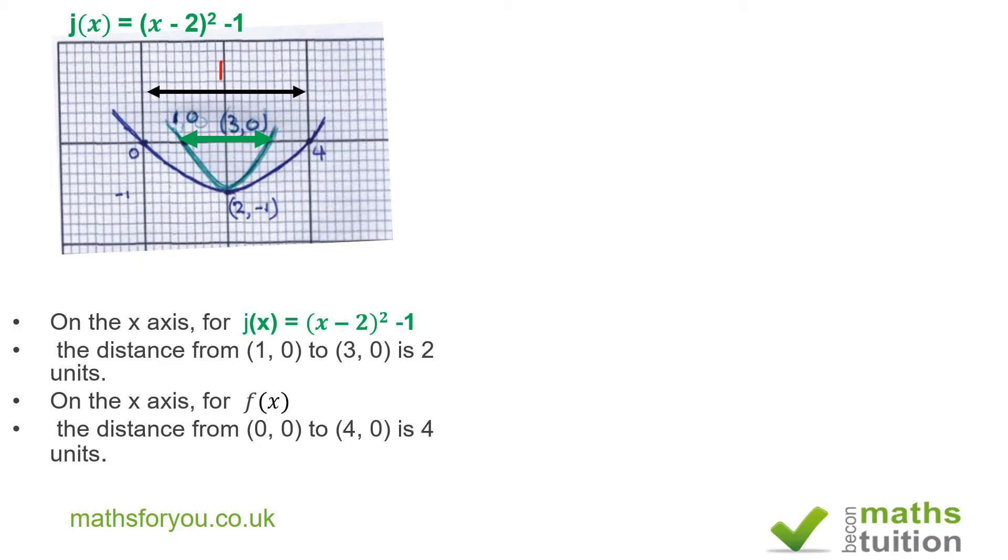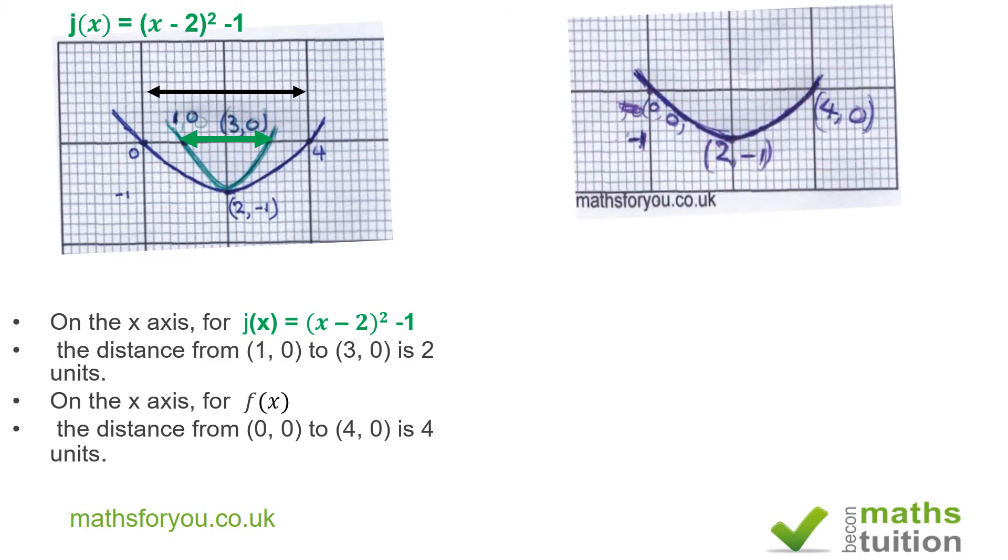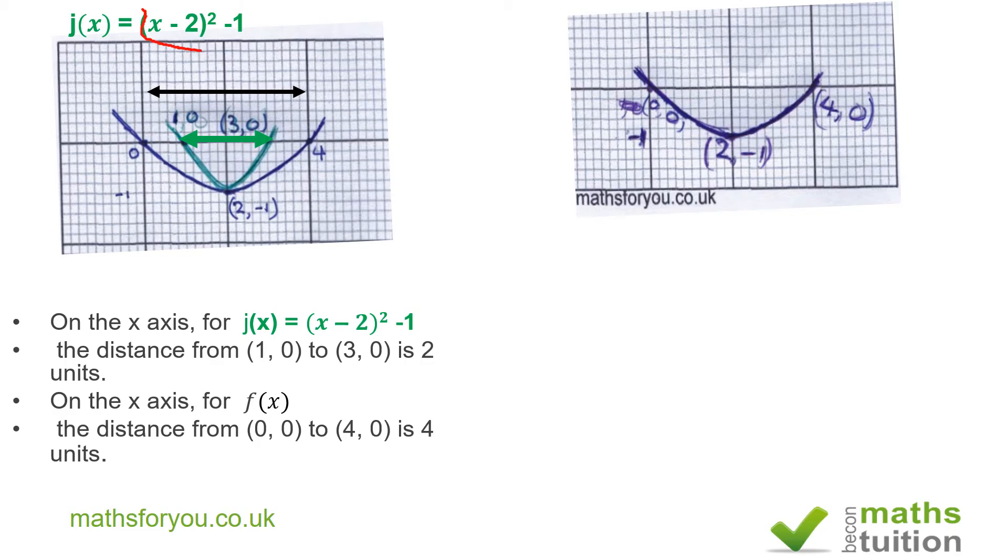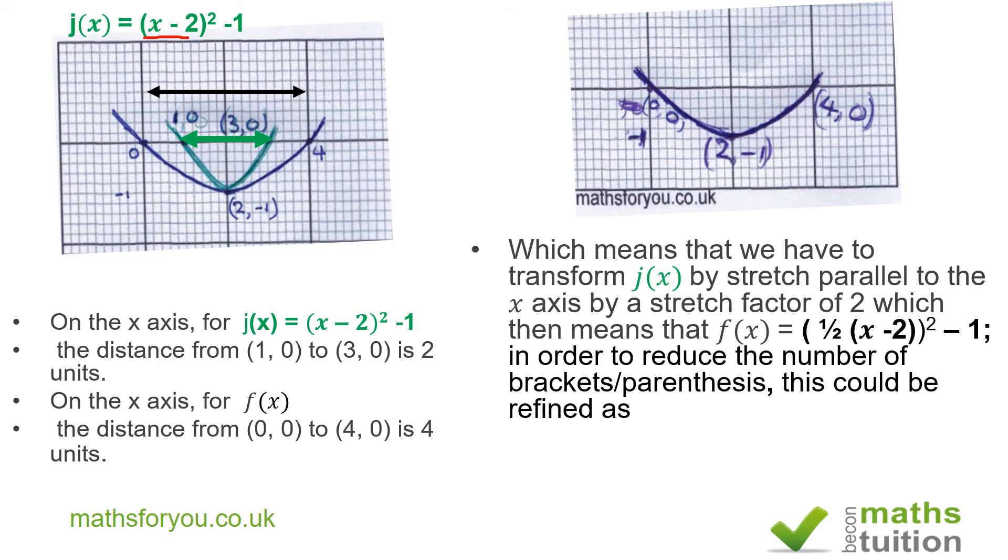Now I want to transform g(x) such that the minimum point there at (0,0) will be there. Now I can do that by the process of translation. So I've now translated g(x) to what I've called h(x) with a vector of (2,0). So this graph now is the graph of h(x), and the equation of h(x) is x minus 2 all squared. Now all I've done is to replace this x there by x minus 2. So now h(x) is x minus 2 all squared.